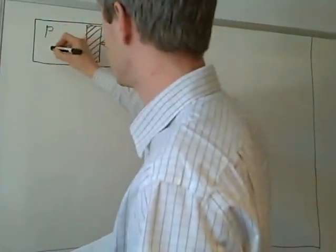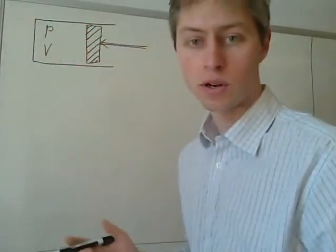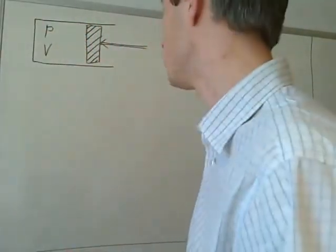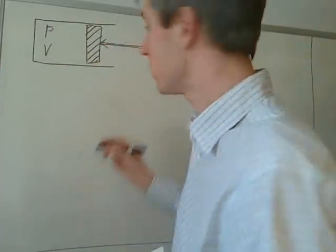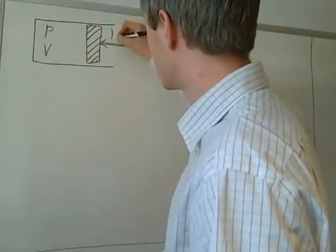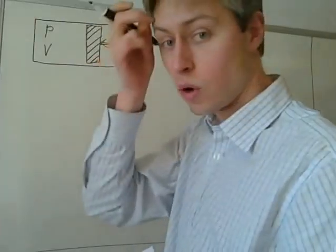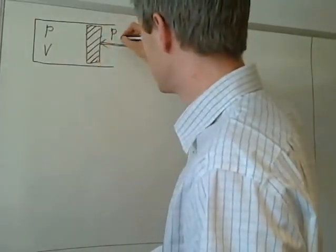We just call it p, and volume V. Initially, we have p1 of one bar and volume of one meter cubed. On the other side of the piston, we have a pressure, atmospheric pressure acting, or one bar. So we just call that p1.